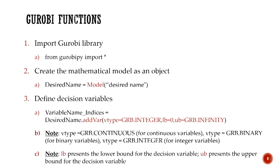In order to define decision variables, we call the model's desired name dot add_var or add_variable. We can have different variable types — they can be integer values, continuous, or binary. In this example, you see vtype equal to GRB.INTEGER, referring to Gurobi dot integer, which means that all decision variables can be integer.